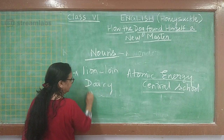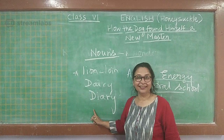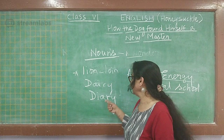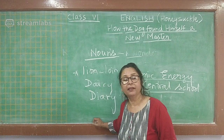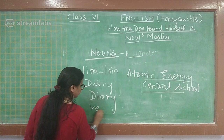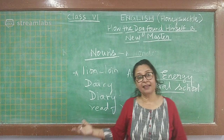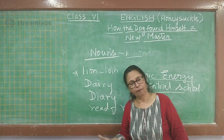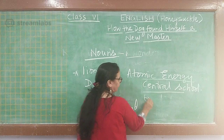Another pronunciation pair: 'dairy' and 'diary.' Dairy — D-A-I-R-Y — is where you get milk, like a dairy farm. Diary — D-I-A-R-Y — is the one I gave you as homework in Chapter 1. Also, 'read' — present tense — and 'read' — past tense — are spelled the same but pronounced differently. The third form is also 'read.'